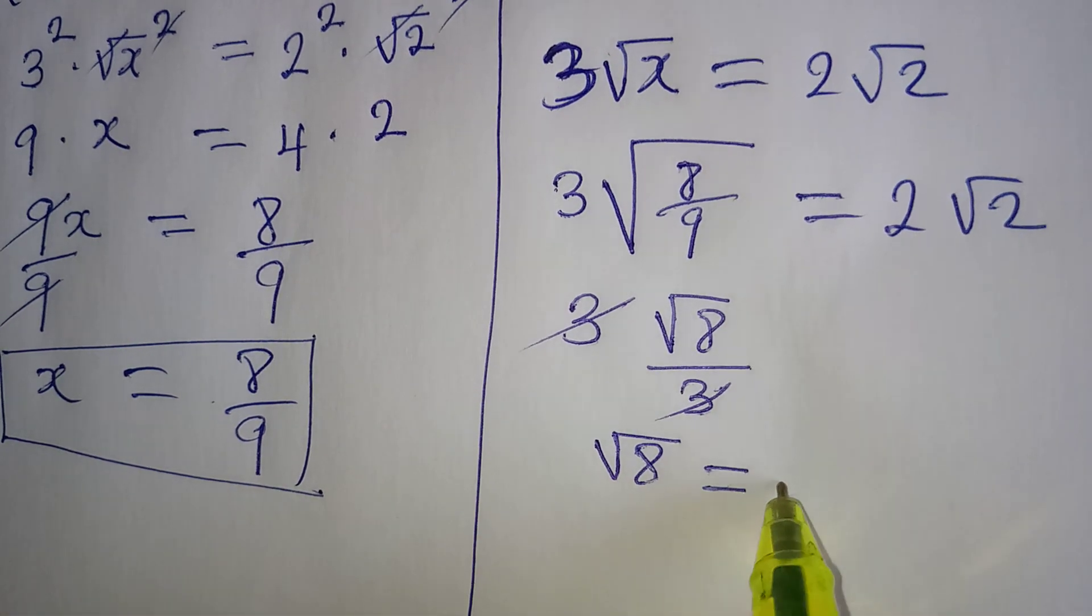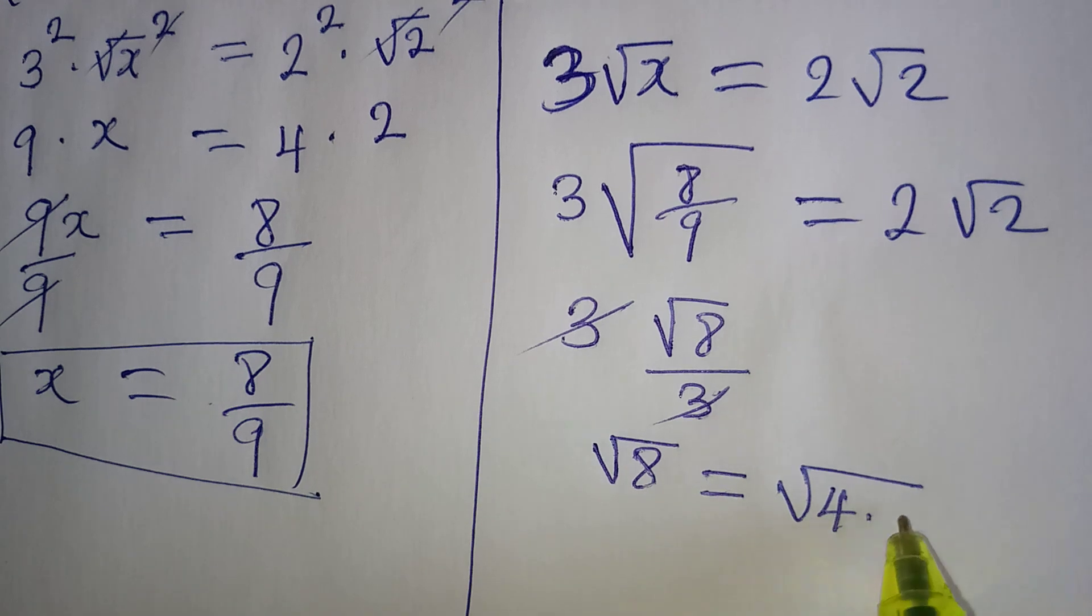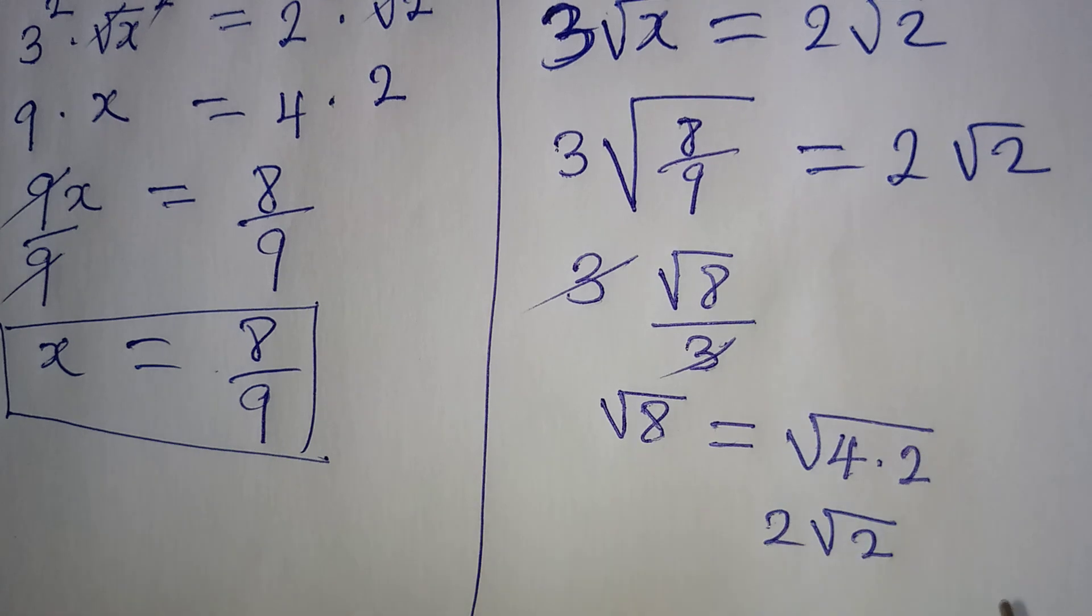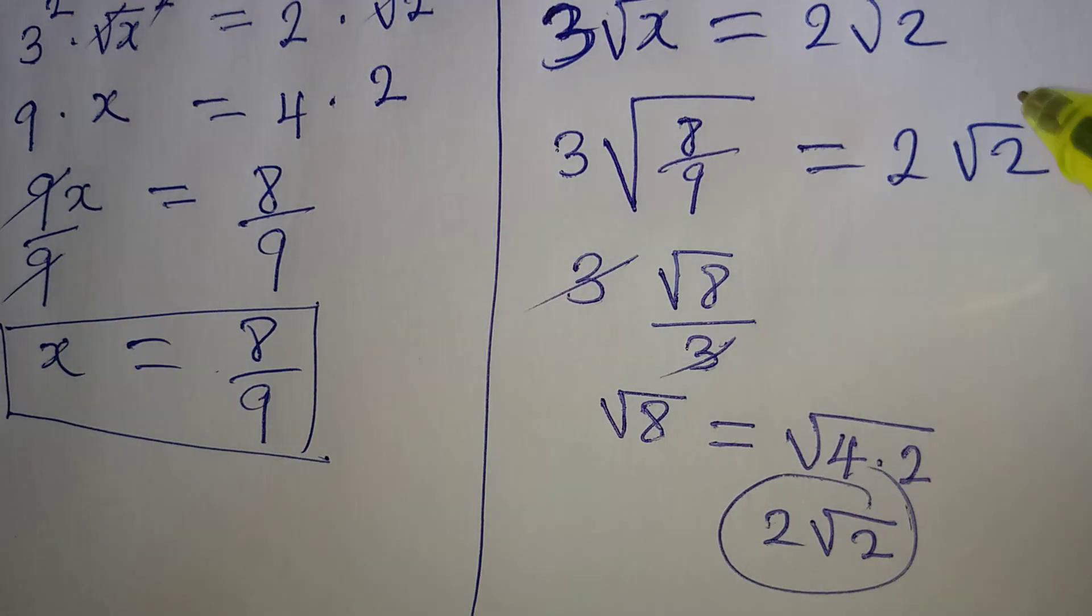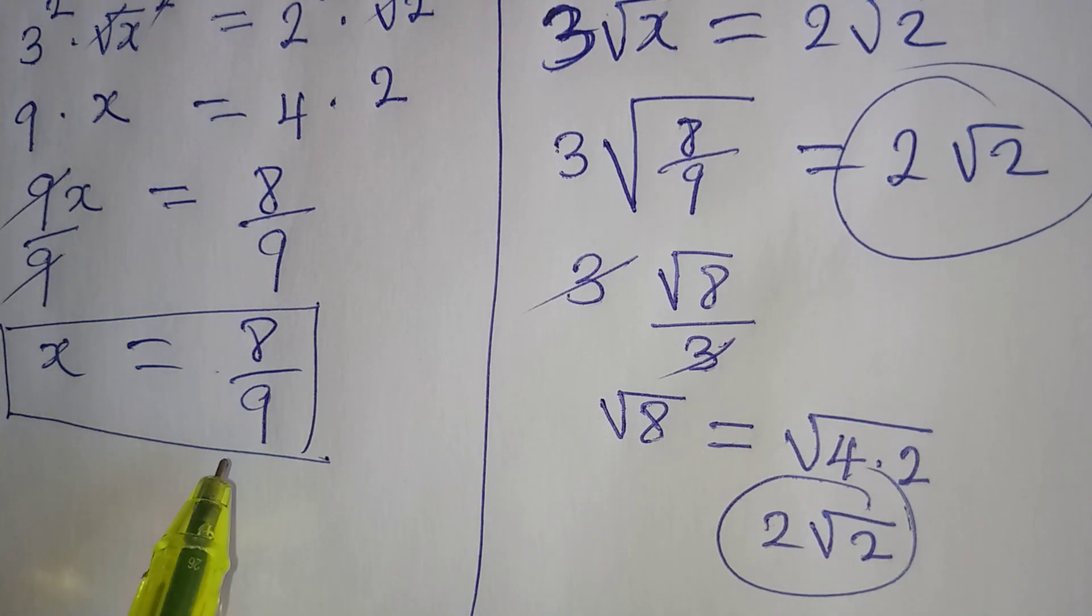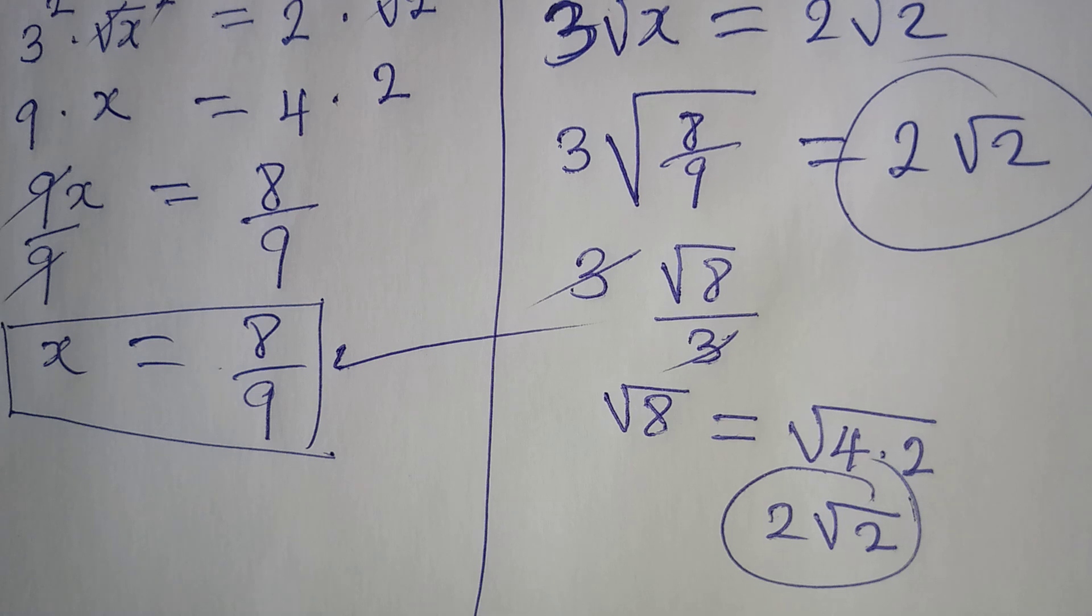And this can be broken into 4 times 2. Square root of 4 is 2, so we have 2 root 2. And this is what we had on the right hand side. So this is to confirm that our 8 over 9 is very correct as a value of x. Thank you.